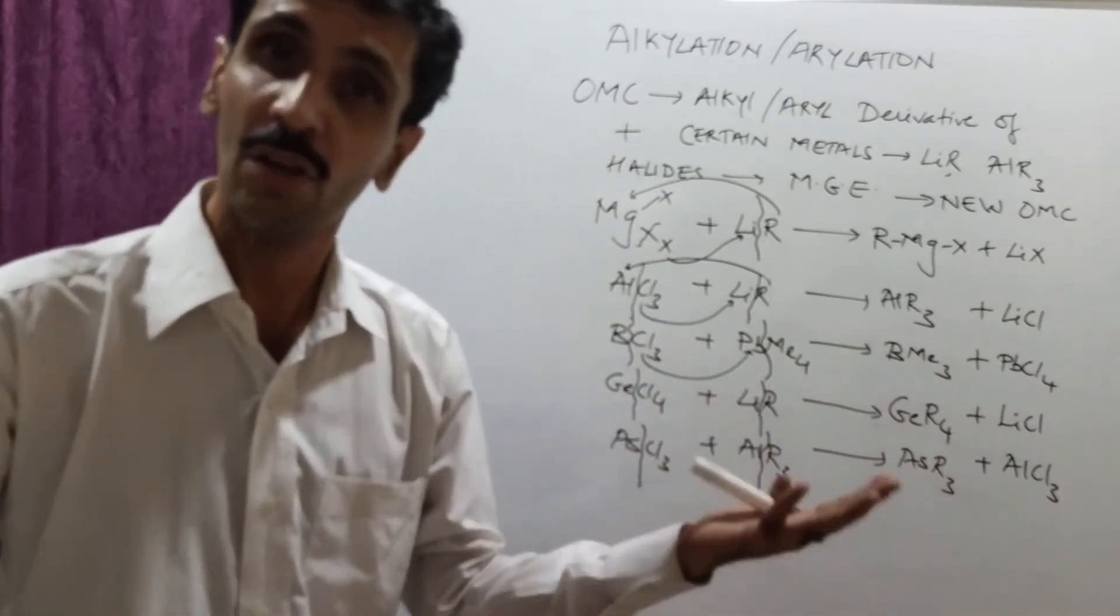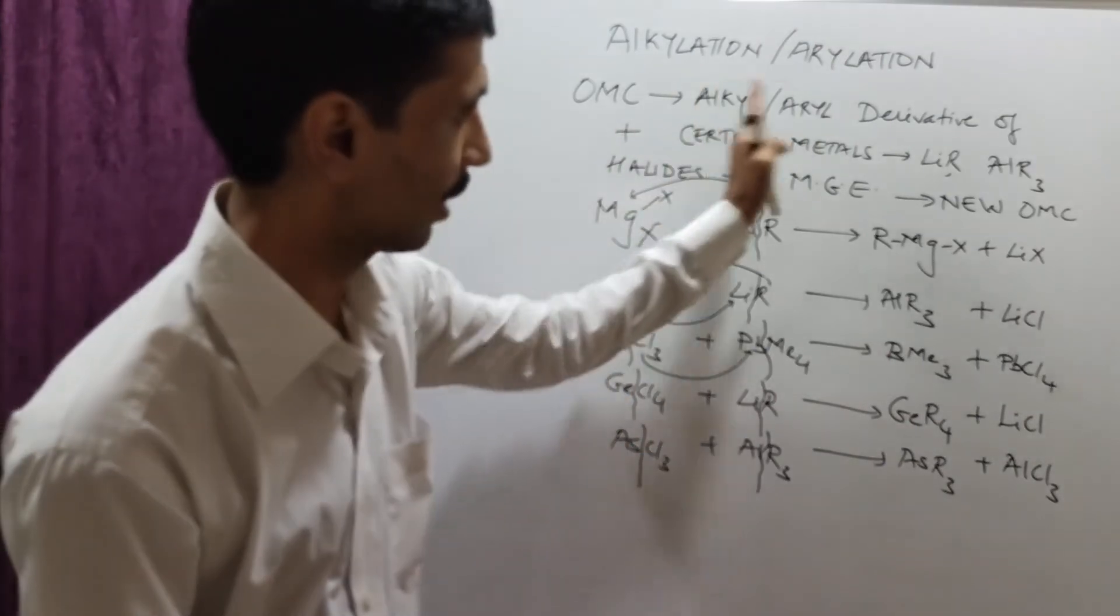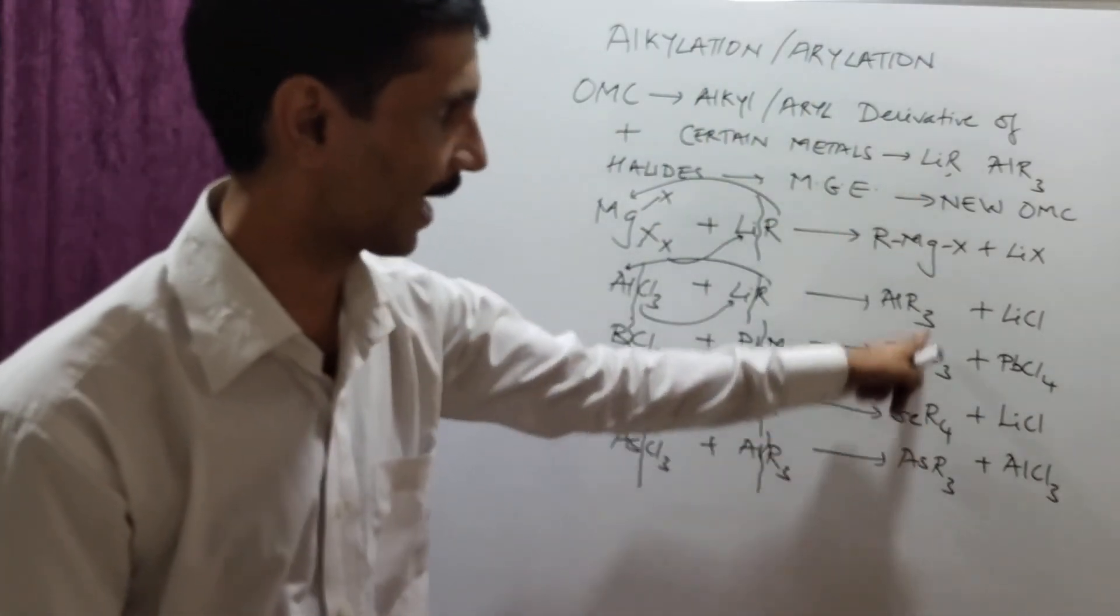That is, we have S and P block elements. You can take these examples: magnesium, aluminium, boron, germanium, arsenic. These are all main group elements and that will combine to give you new organometallic compounds.